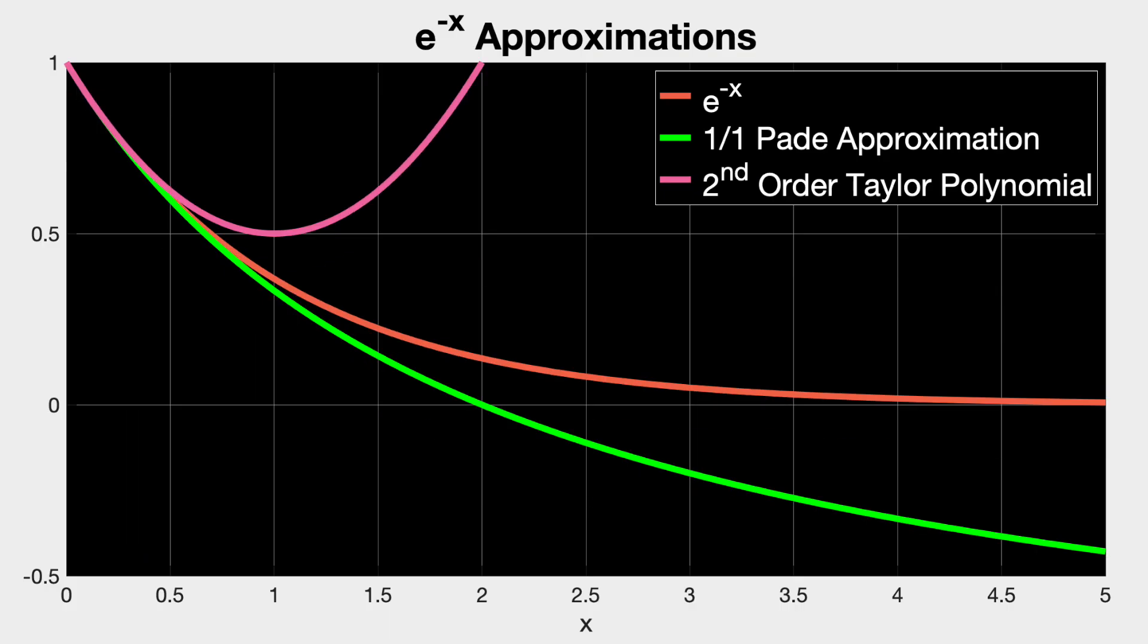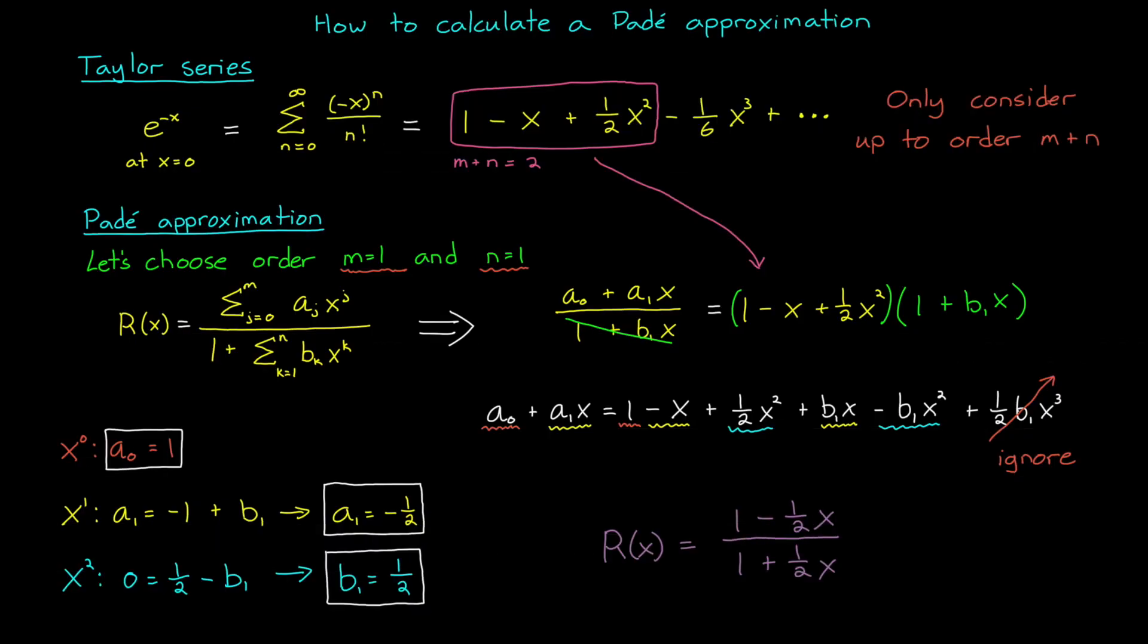It kind of seems like magic. But by solving this equality, and then discarding the higher order terms, we've produced an approximation that's a better fit of e to the minus x than the second order Taylor polynomial. And it kind of makes sense if you think about these results as transfer functions. Given the same number of states, a transfer function with poles and zeros can produce a more complex behavior than one with just zeros.